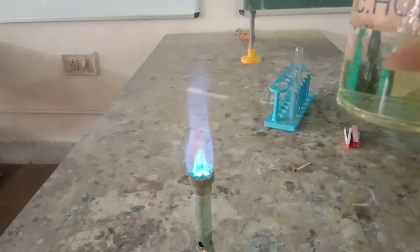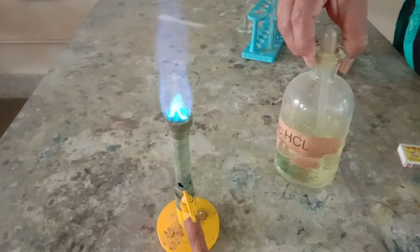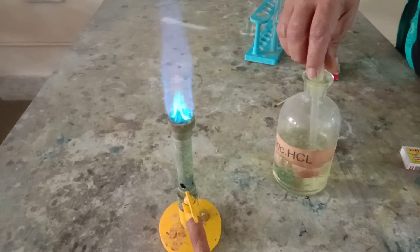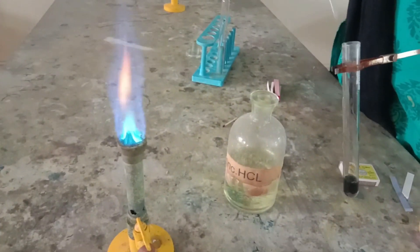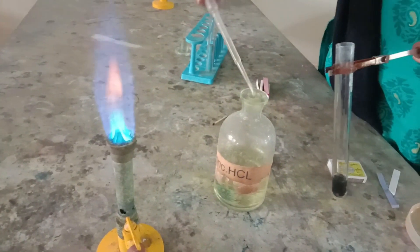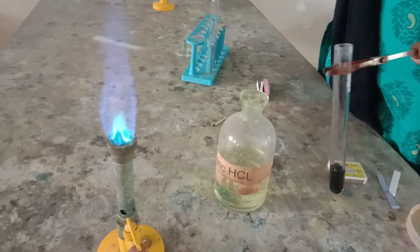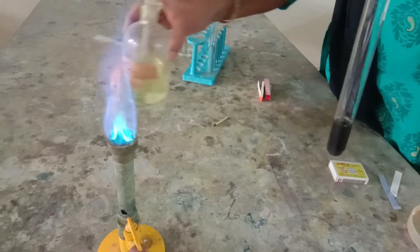Let's ignite the Bunsen burner and very carefully add some amount of concentrated hydrochloric acid with the help of the dropper into the test tube. We will need to heat the contents in the test tube.